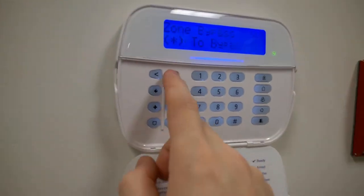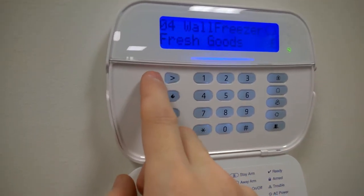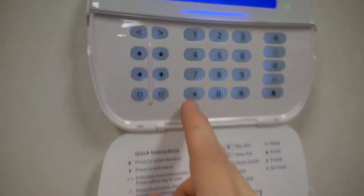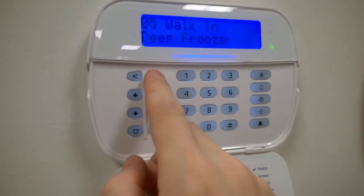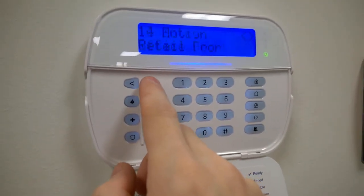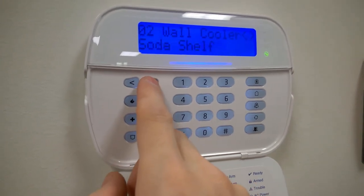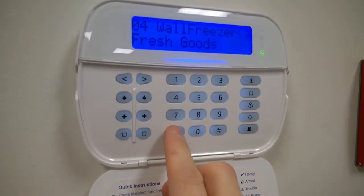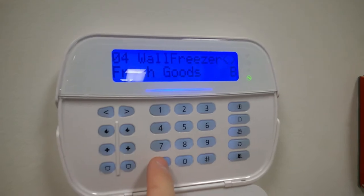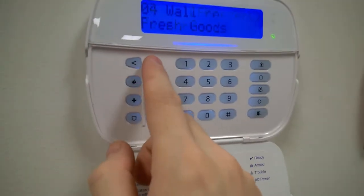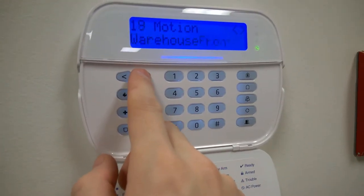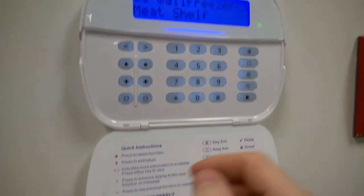I have one of the zones bypassed there. If you need to bypass a zone, you just hit the star button. It'll show up to show it's bypassed. If you have any open zones, which I don't think I do right now, you'll see a little O in the corner. Anyways, I'm all done here.